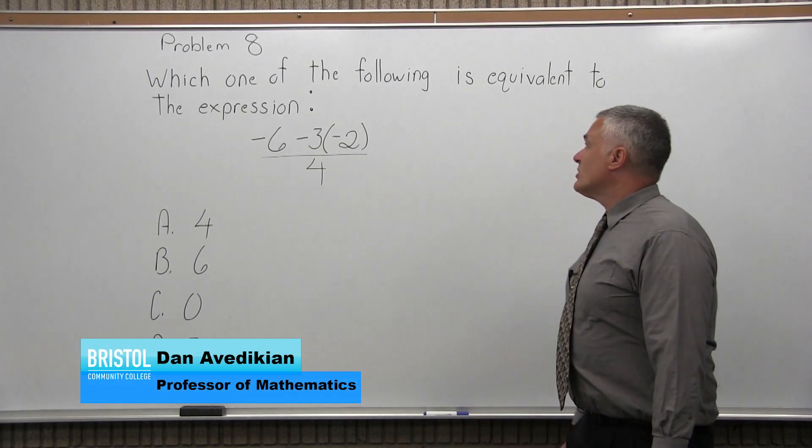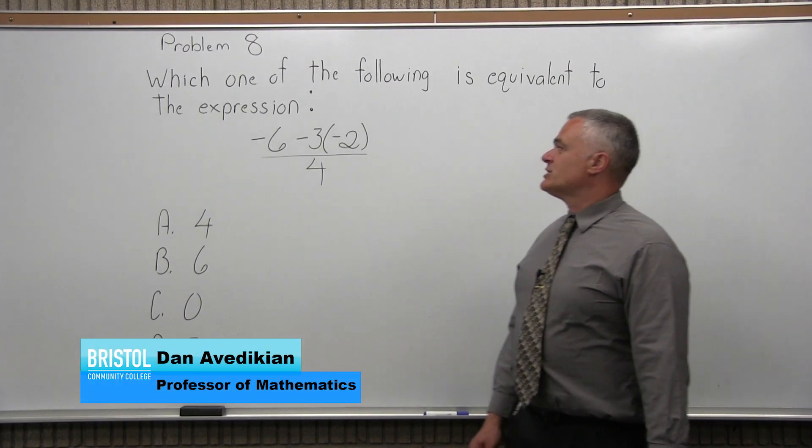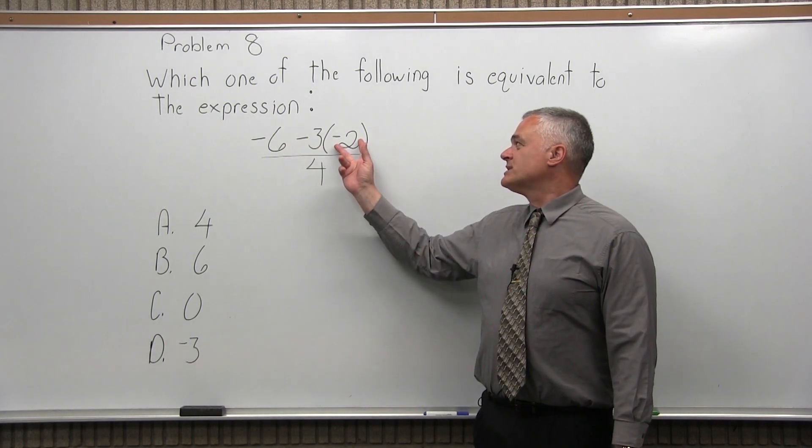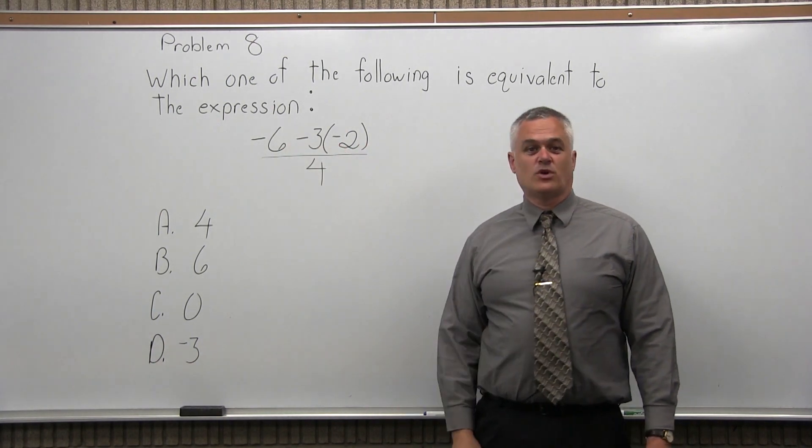This is Problem 8. It says which one of the following is equivalent to the expression, and we have negative 6 minus 3, some parentheses around the negative 2, and a 4 in the denominator.